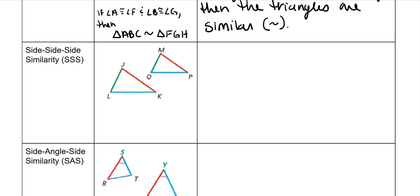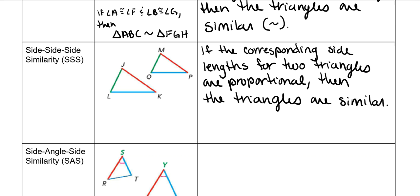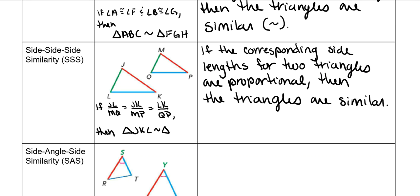Side-side-side similarity says: if the corresponding side lengths of two triangles are proportional — not congruent, as with congruent triangles — then the triangles are similar. So if JL over MQ equals JK over MP and also equals LK over QP, then triangle JKL is similar to triangle MPQ.